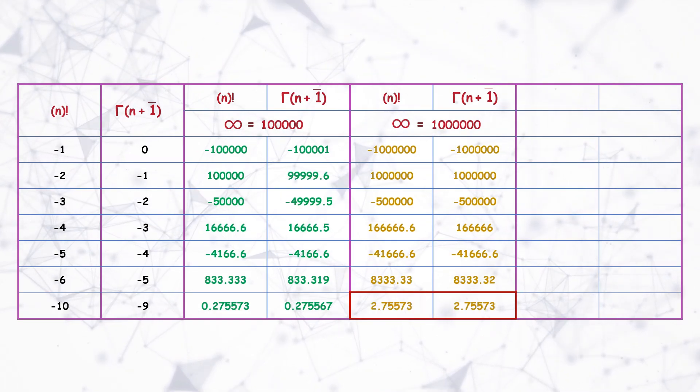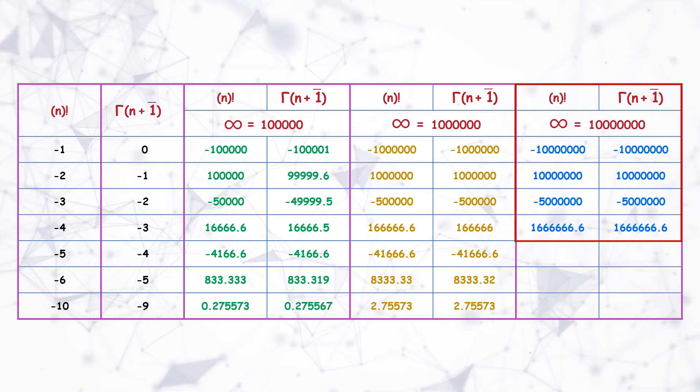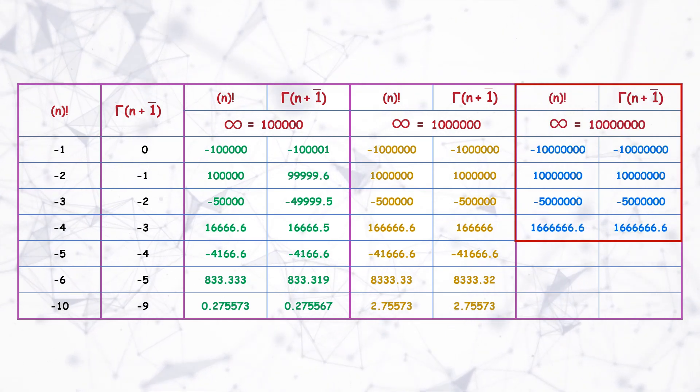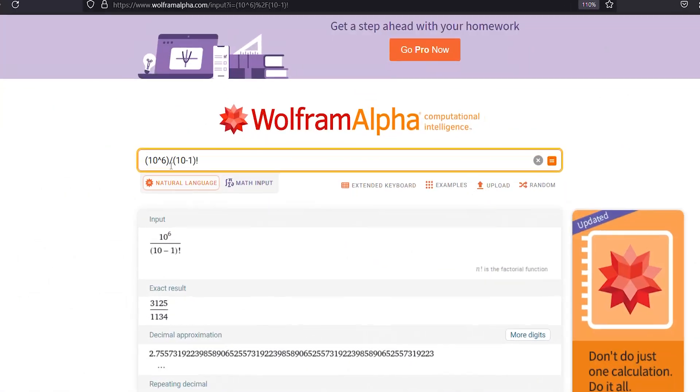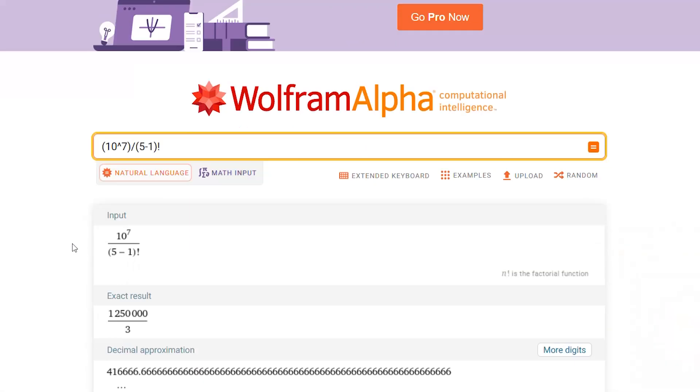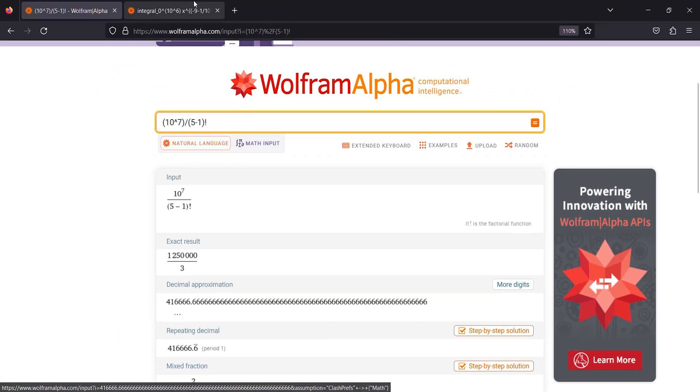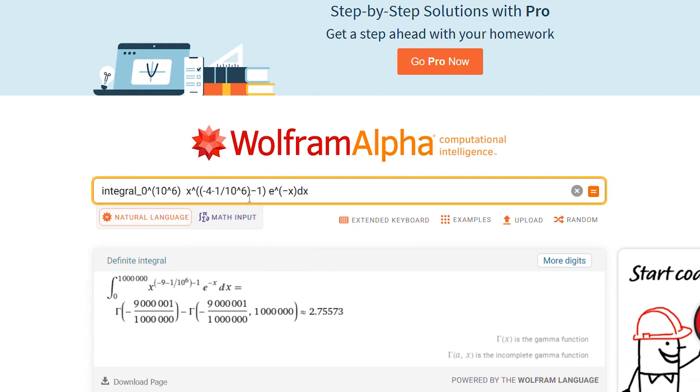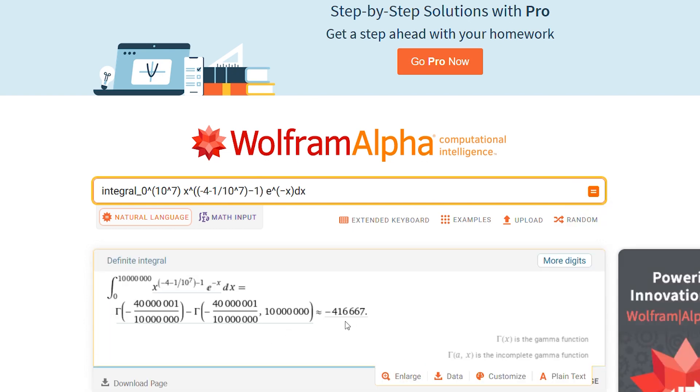Now for next iteration, infinity is 10 to the power 7. So let's skip a few, but let's check for minus 5 factorial. So the solution is 4166666.6. For gamma function it's also the same. If we click more digits, this is actually a rounded off value.